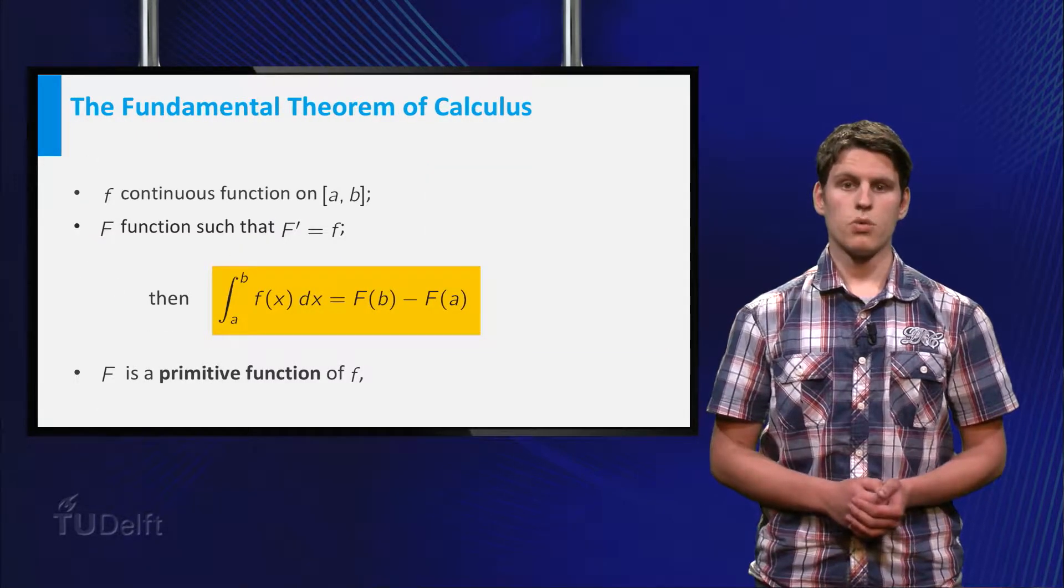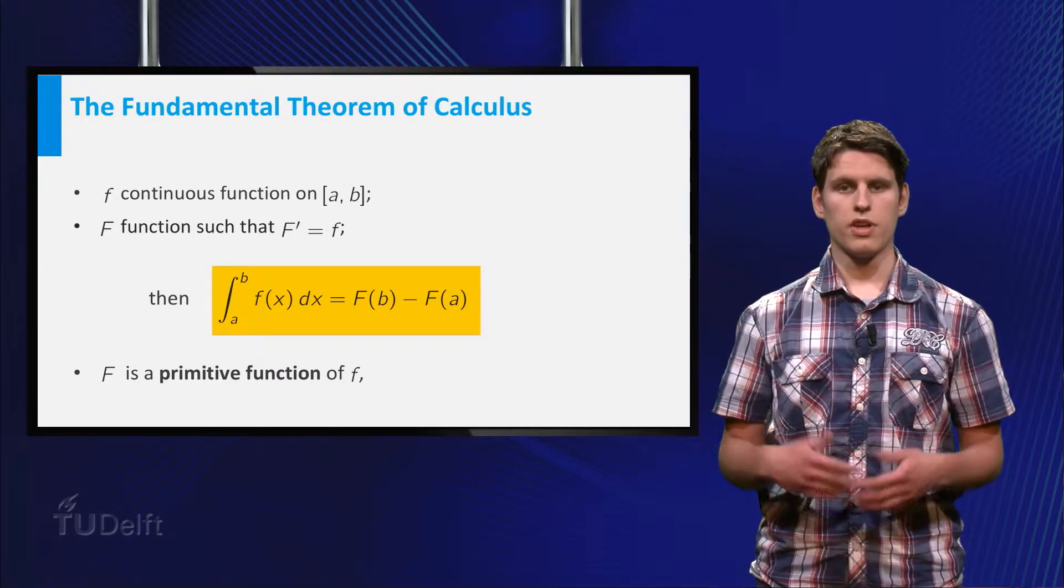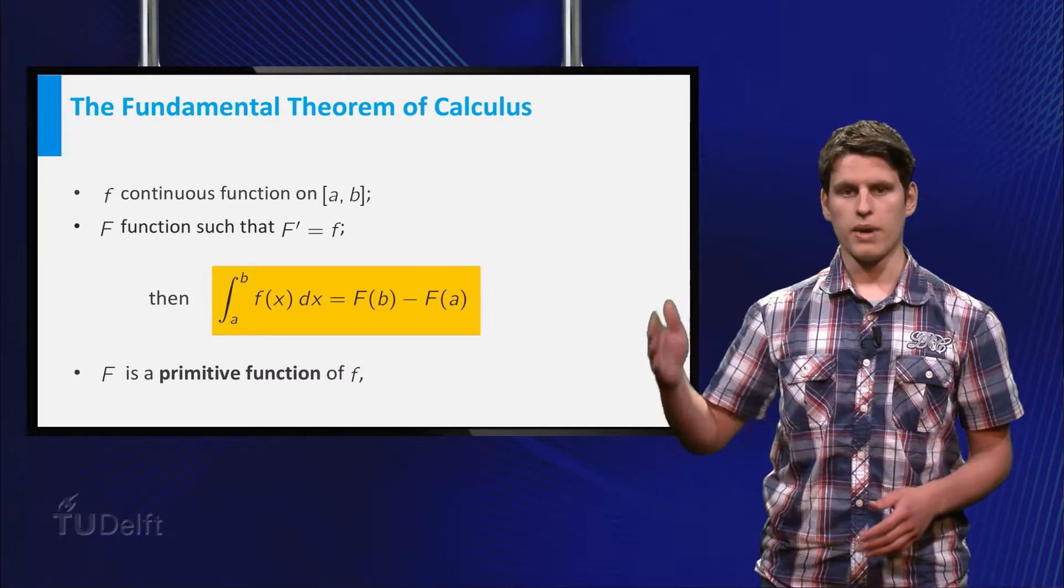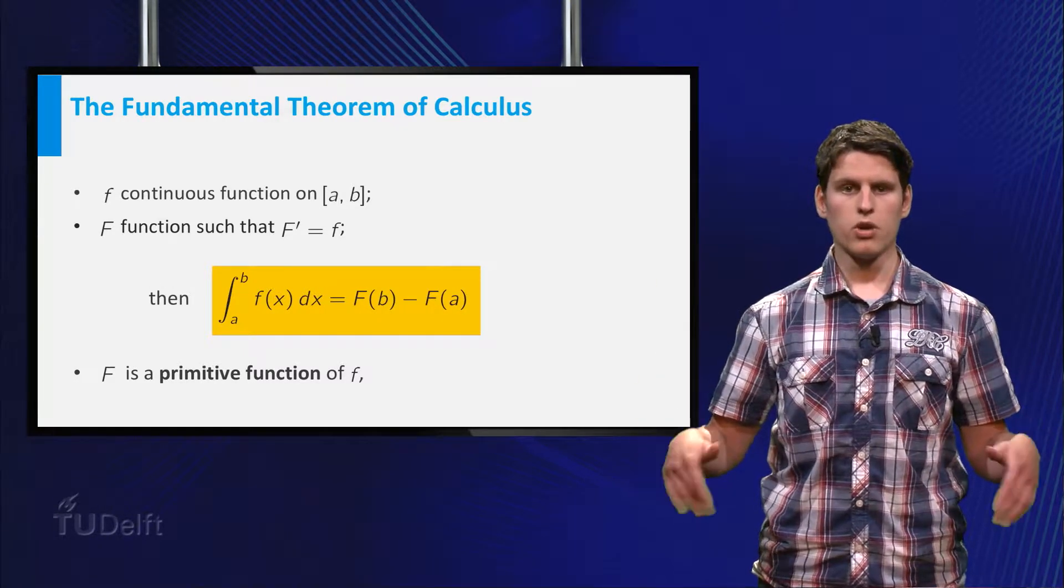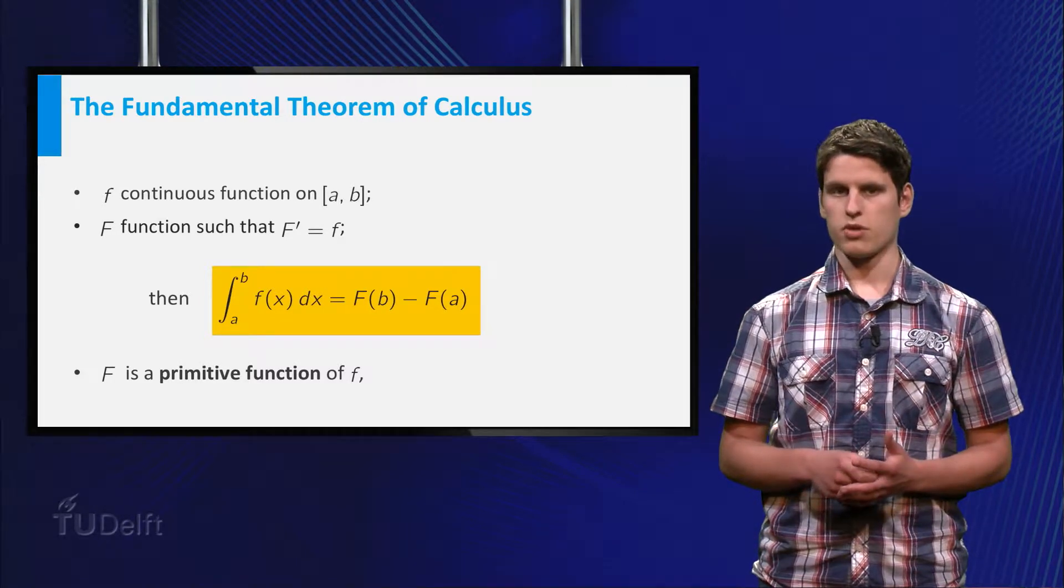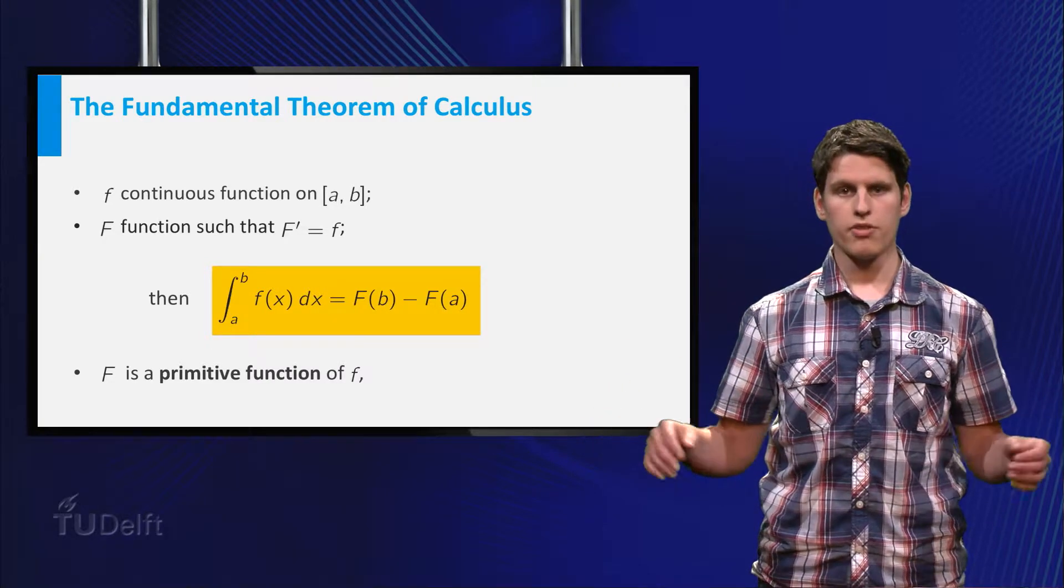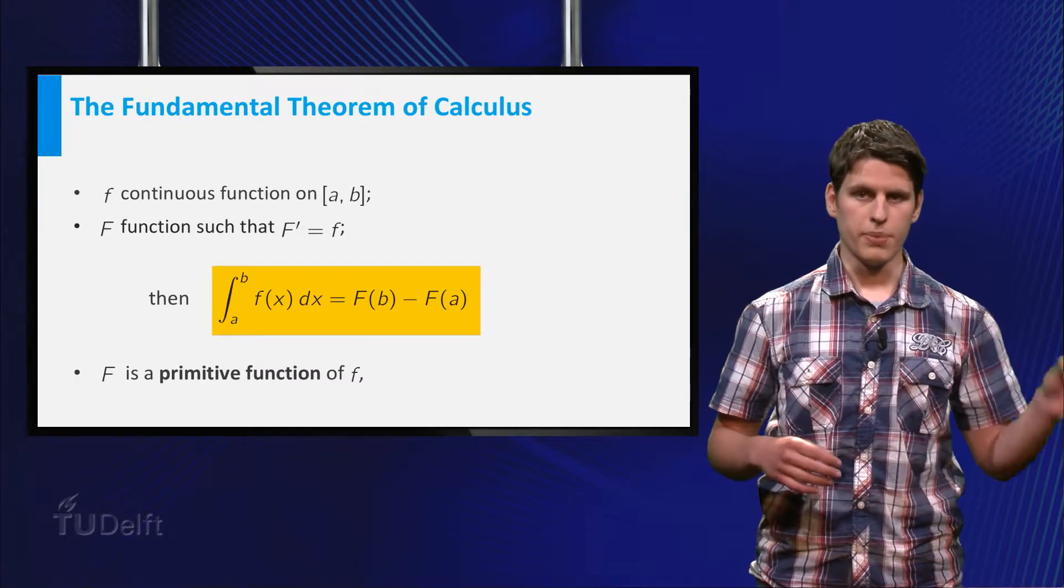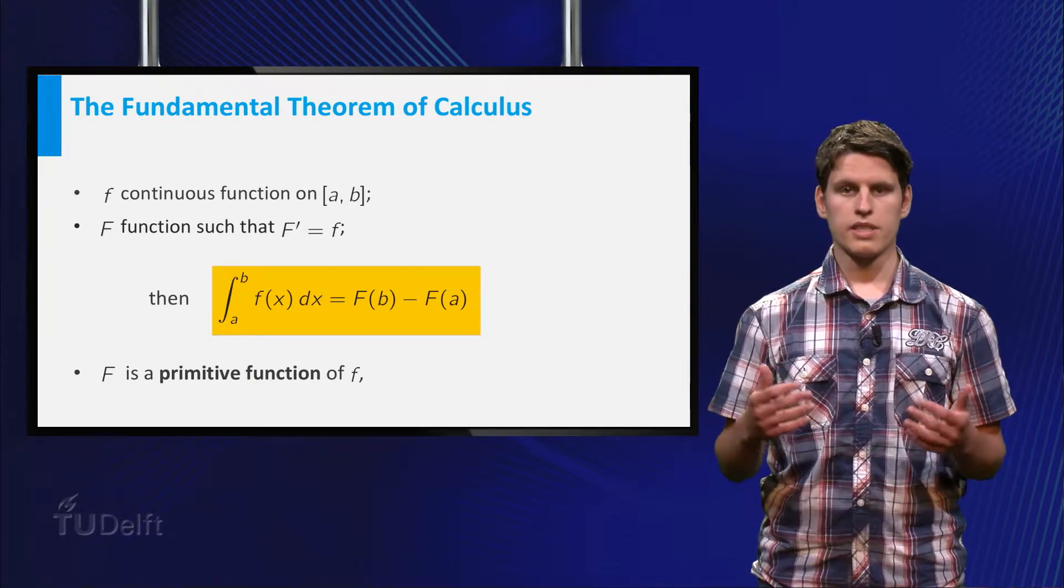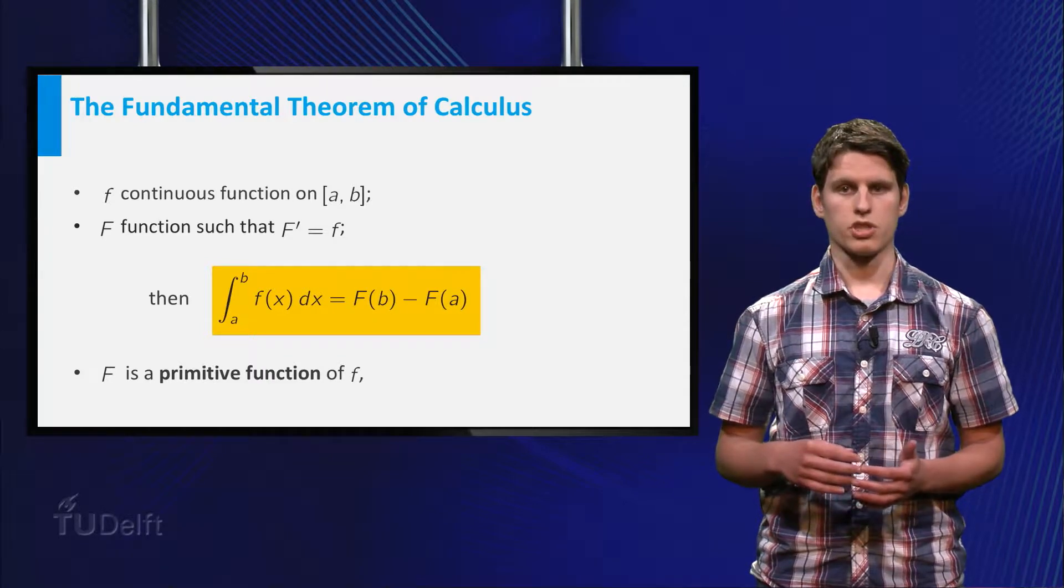Lucky for us, we can use the fundamental theorem of calculus. This theorem tells that if we have a continuous function f on the interval from a to b, and we know that small f is a derivative function of capital F, then the integral from a to b of small f equals capital F in B minus capital F in A. This function capital F is called a primitive function of f.